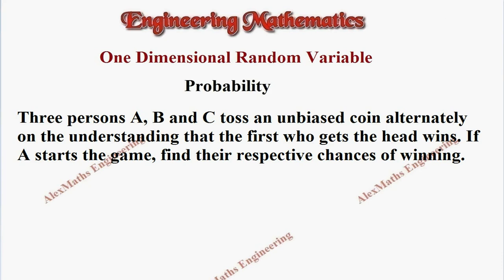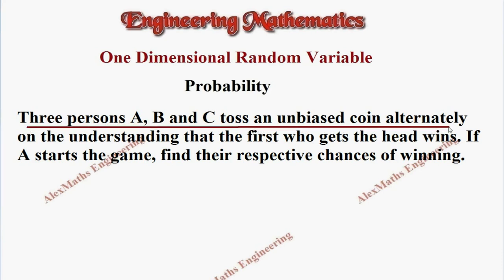Hi students, this is Alex here. In this problem, they have given 3 persons A, B and C toss an unbiased coin alternatively, on the understanding that the first who gets the head wins. If A starts the game, find the respective chances of winning.